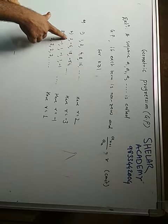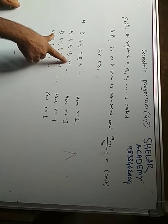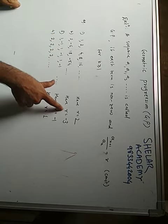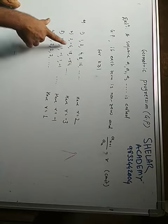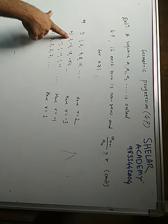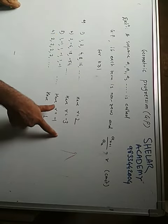Next example is 2, minus 6, 18, minus 54. Here the ratio R is equal to minus 3. If you take minus 6 upon 2, it will be minus 3. 18 upon minus 6 will be minus 3 and so on.